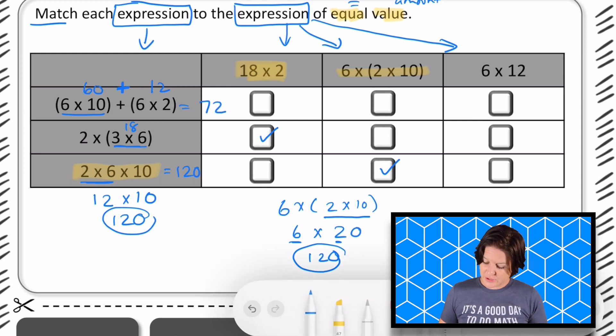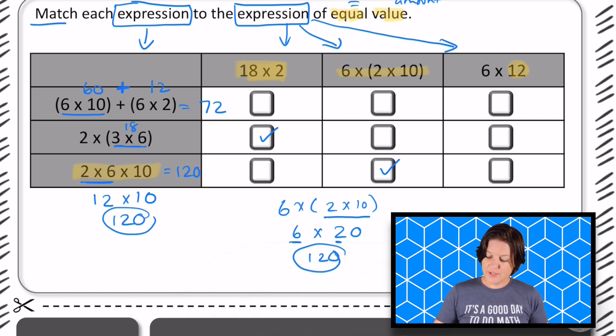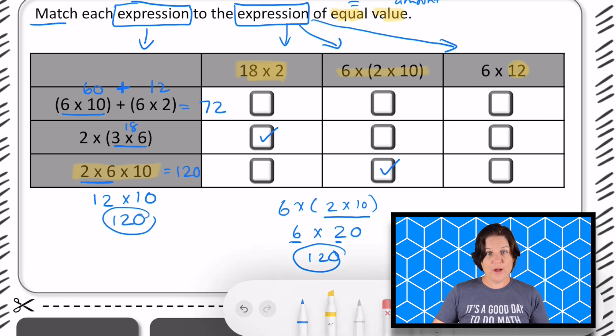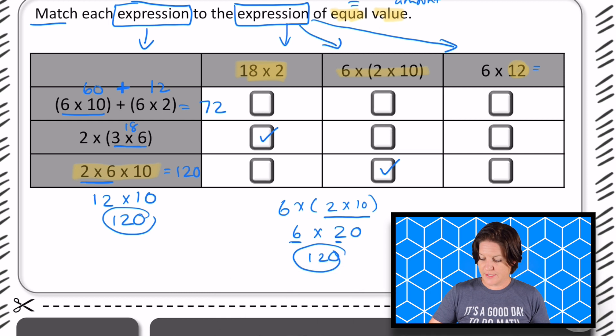And it looks like we've actually kept the six, right? And we've broken down this twelve into ten and two. 6 x 12 we know is also seventy two. So those have equal values again. So now with some more evidence, some more proof and reasoning, we can go ahead and select that last answer with confidence.